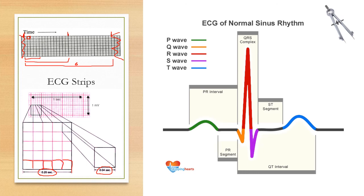When measuring intervals, we count small boxes to determine whether waves fall within normal time frames. For the QRS complex, the maximum of 0.12 seconds equals three small boxes (3 × 0.04s). This same approach is applied to the PR interval, QRS complex, and QT interval to detect deviations from the norm and identify any abnormalities in the ECG reading.